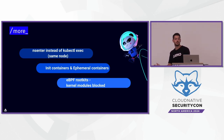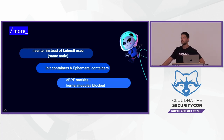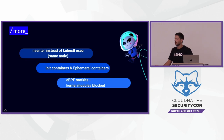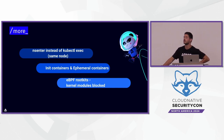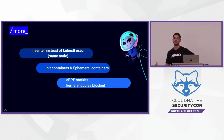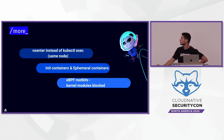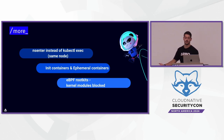The last point is eBPF rootkits. Kernel modules are easy to detect and all runtime tools basically detect when you load a kernel module — and sometimes it's even impossible to load one. For example, Docker by default comes with a seccomp profile that prevents the init_module system call for loading kernel modules. So you can abuse eBPF for rootkits as well. There are amazing open source examples on GitHub you can download and play with — whether it's stealing secrets or creating a socket.